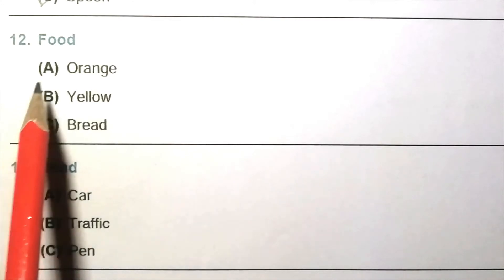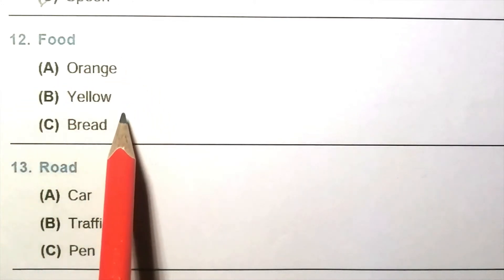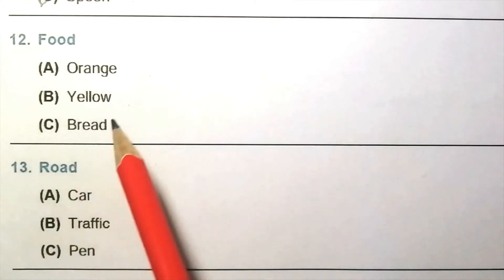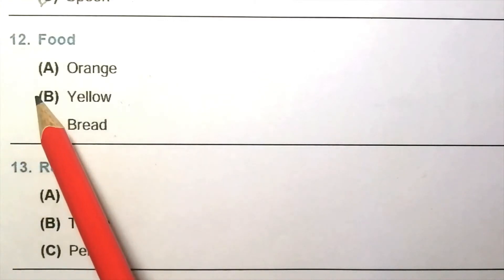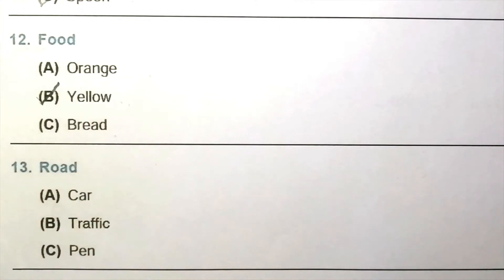Question 12: Food. Orange, yellow, bread. Yellow is a color, not a food. So the answer is B, yellow. Question 13: Road. Car, traffic, pen. And here pen is not related with road. So the answer is C, pen.